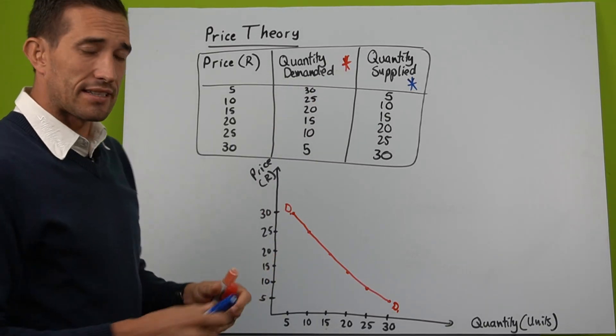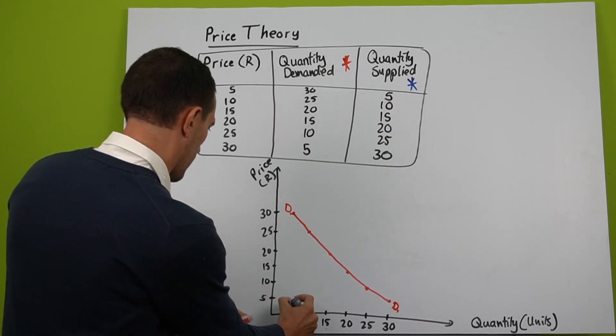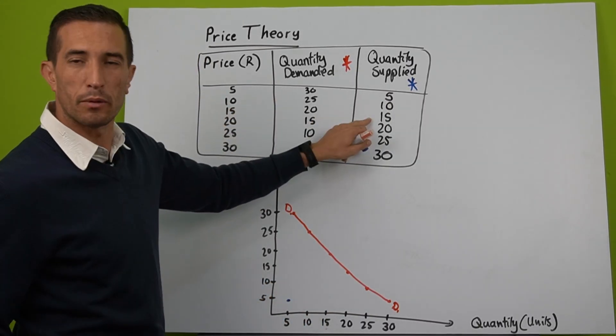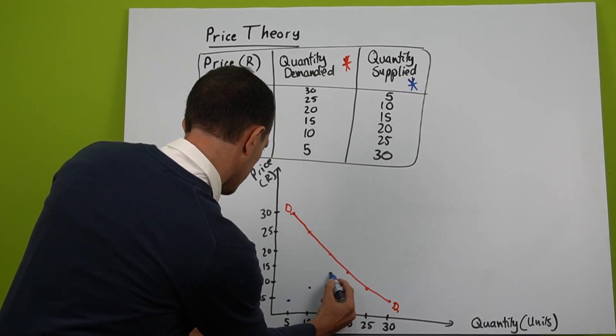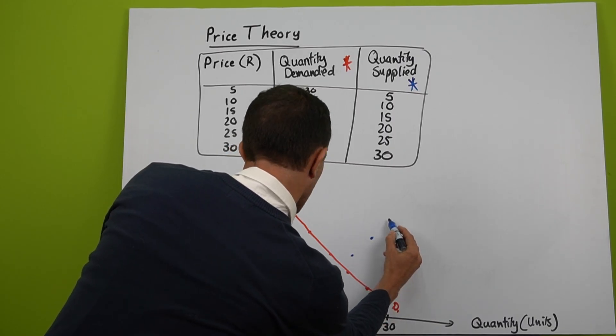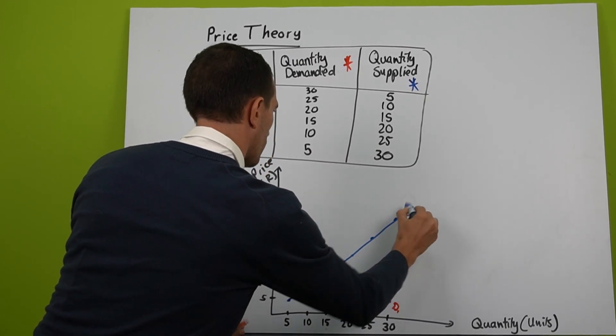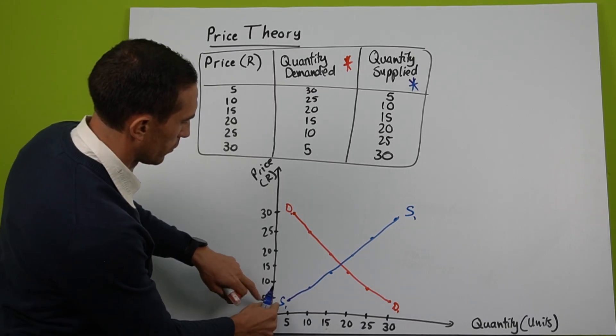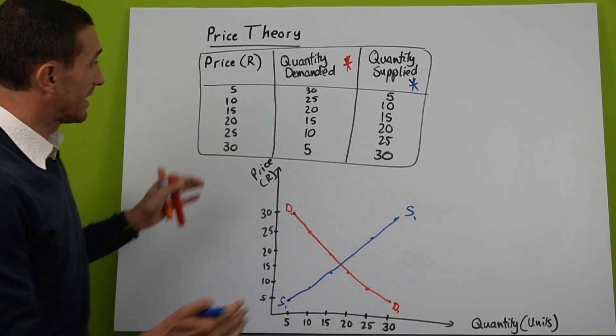Now quantity supply is quite the opposite. At 5 rand we want to supply 5. At 10 we want to supply 10. At 15 we want to supply 15. So you can draw that. And you must remember to draw your supply, supply, and number it number one.